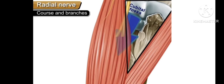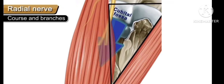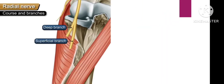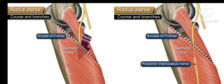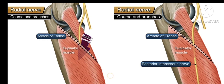After entering and exiting the cubital fossa, the radial nerve divides into two branches: one superficial branch and one deep branch. The deep branch pierces the supinator muscle, which forms a tunnel called the radial tunnel. This tunnel is also called the arcade of Frohse. The arcade of Frohse is a tunnel-like structure within the supinator muscle, and the deep branch passes through it.